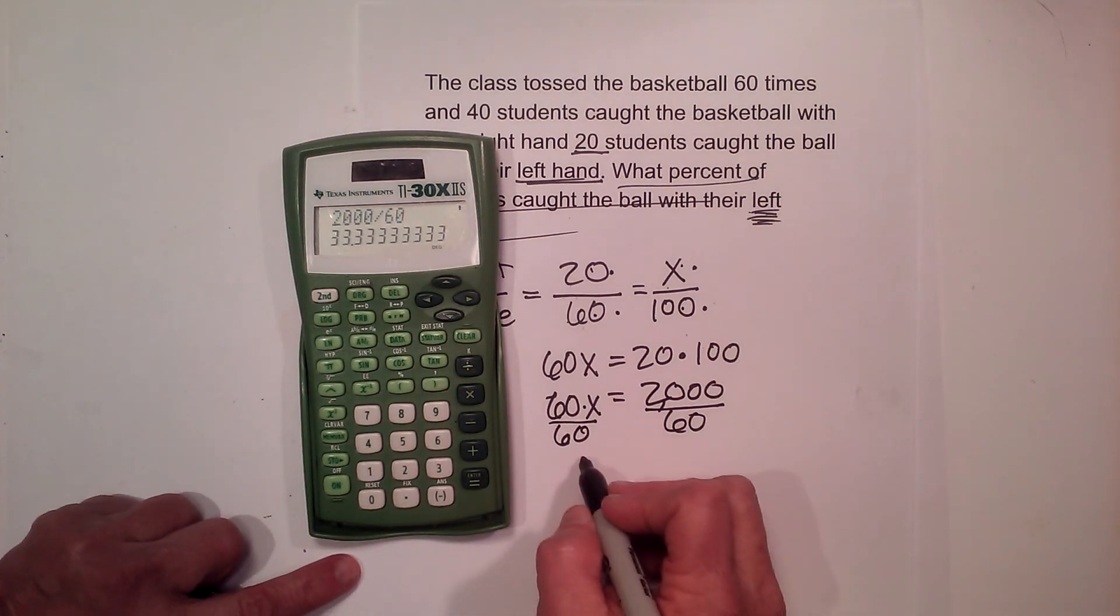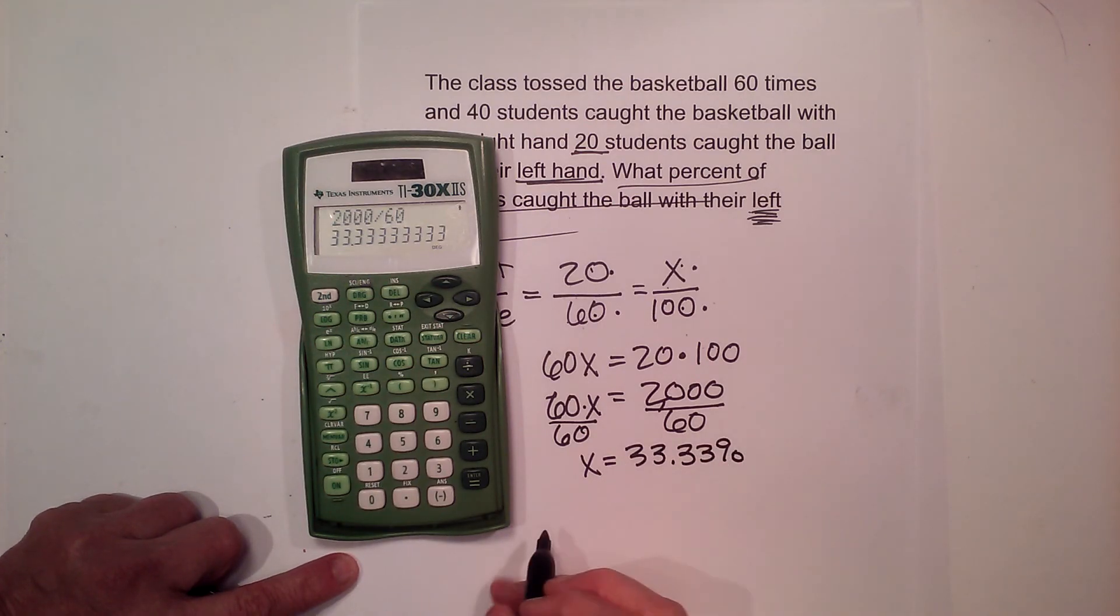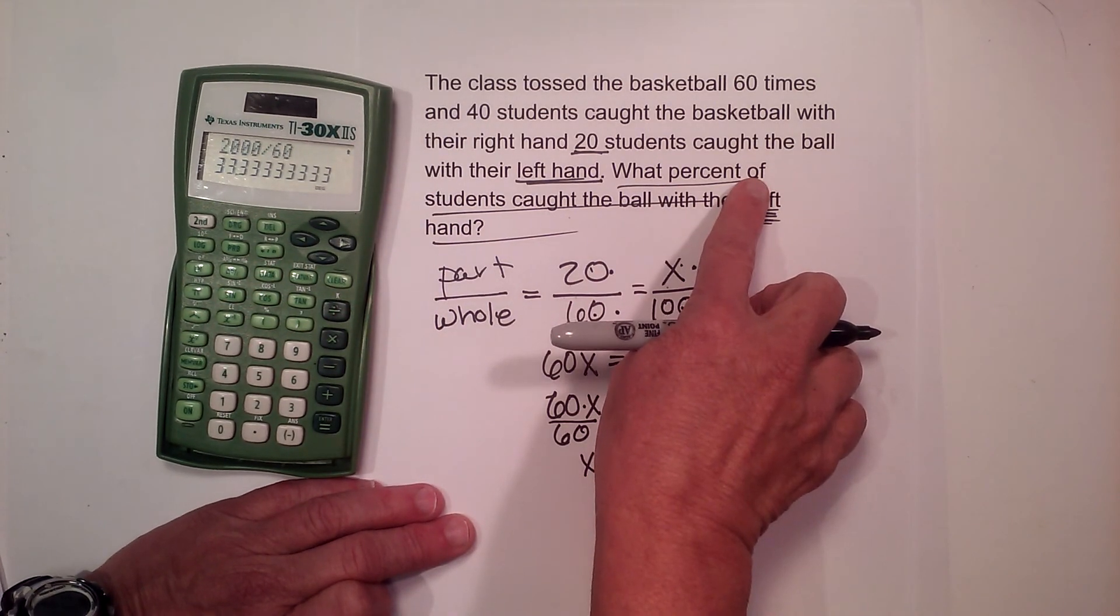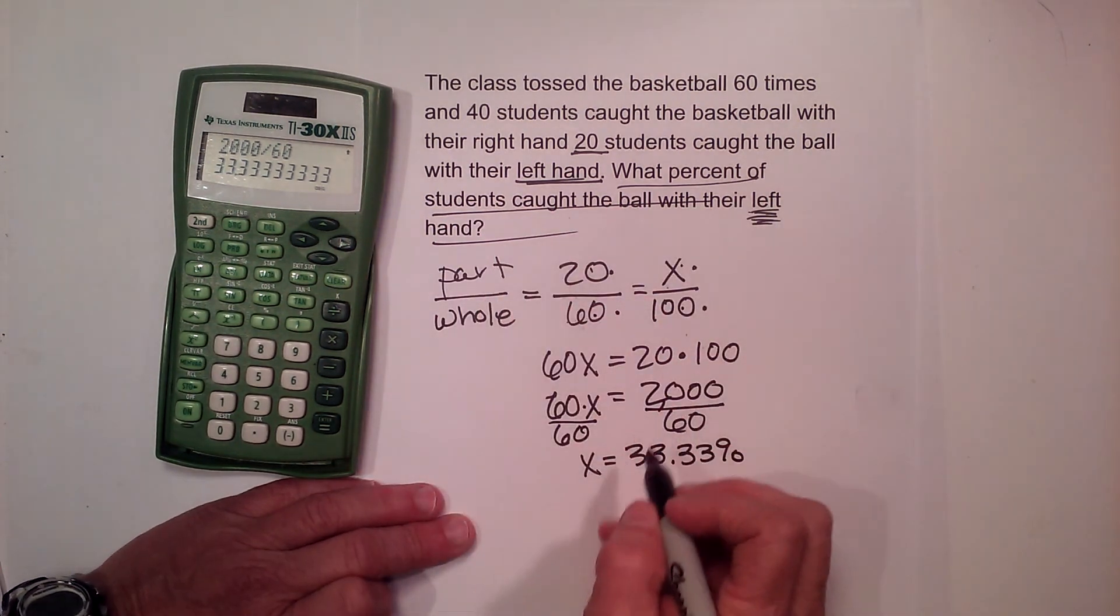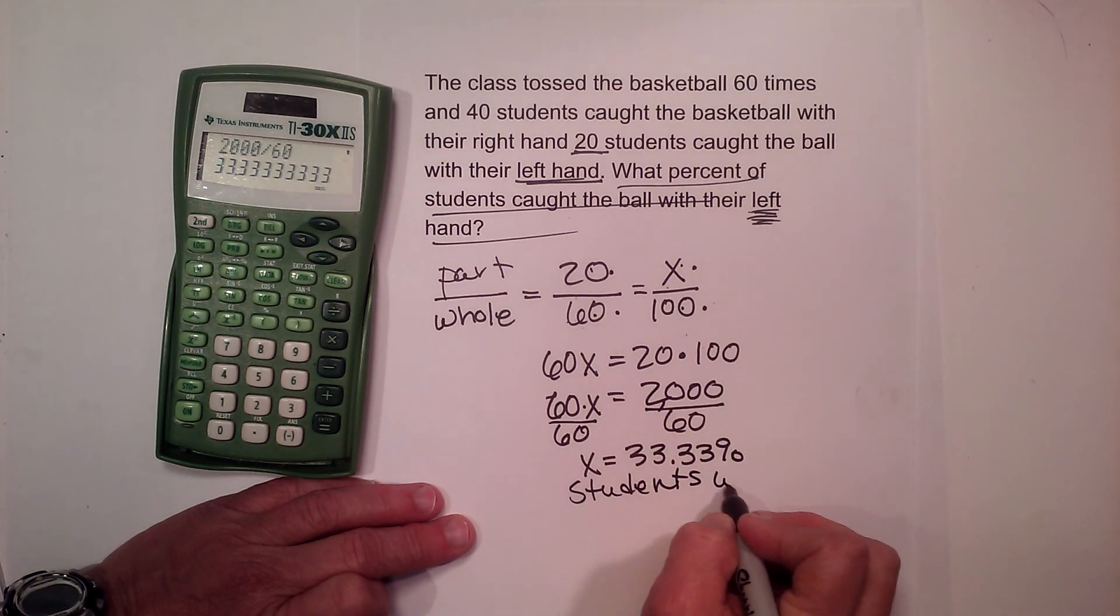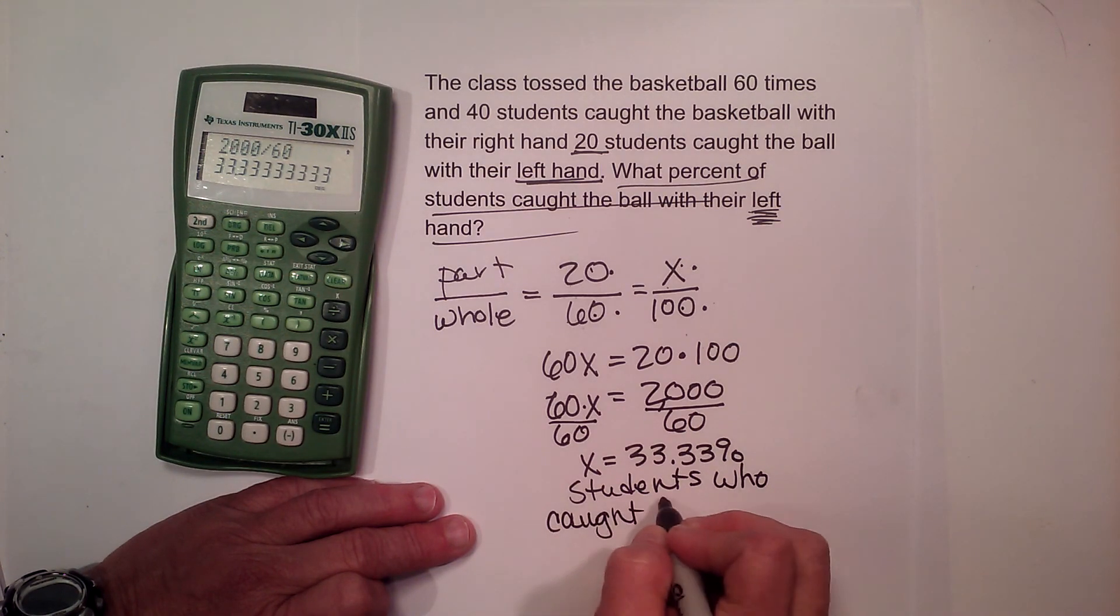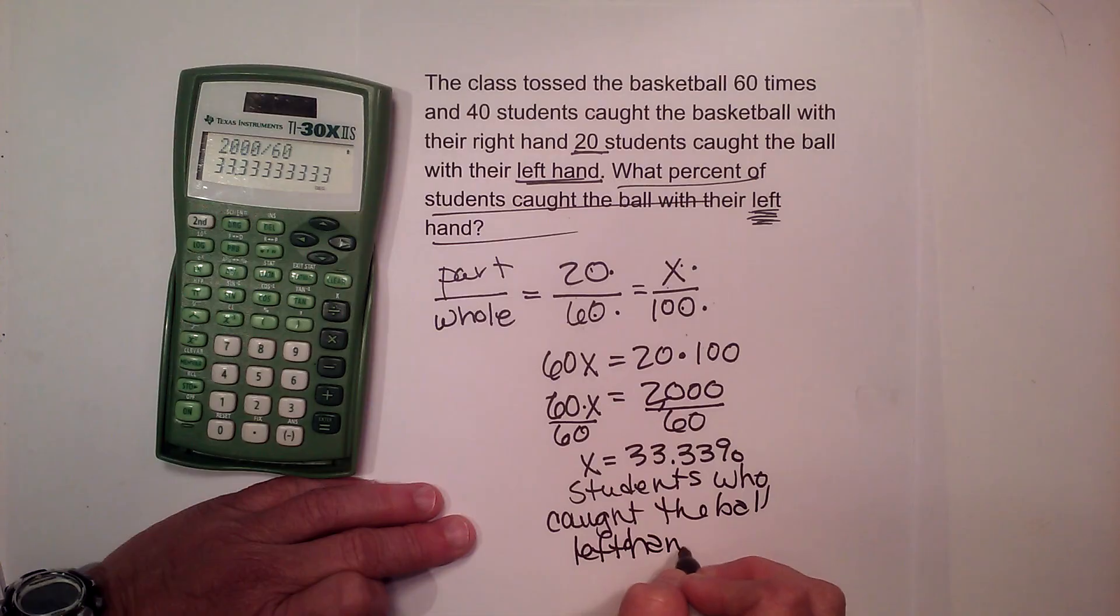So that means x is 33.33 percent. Well that's my percentage. But what does that represent? Go back to the question. It's the students who caught the ball with their left hand. So students who caught the ball left-handed or with their left hand.